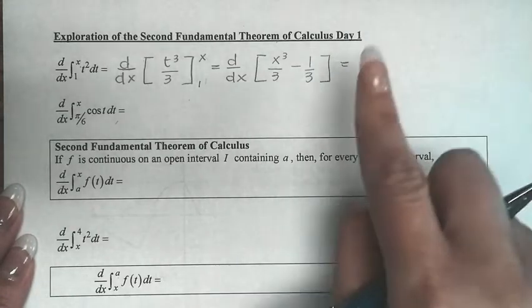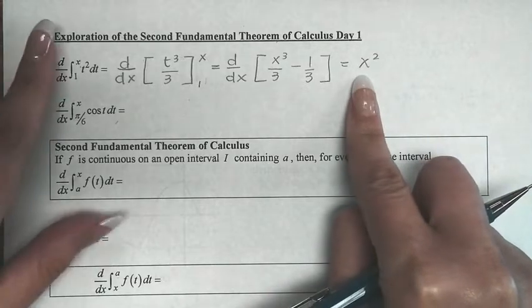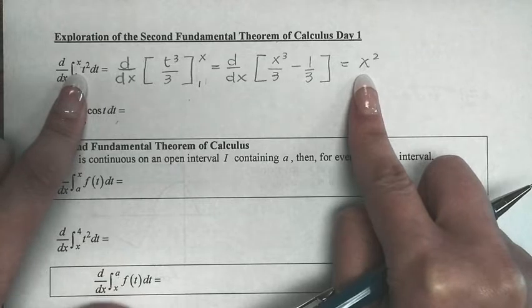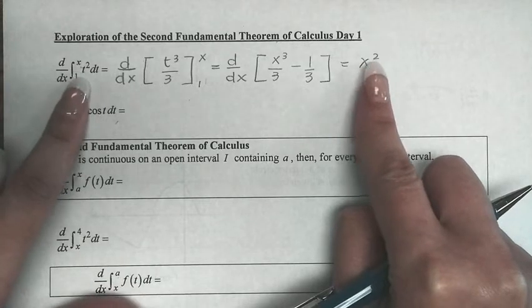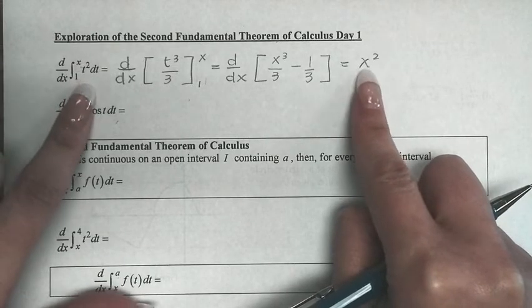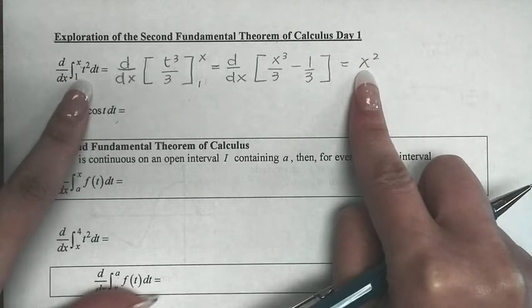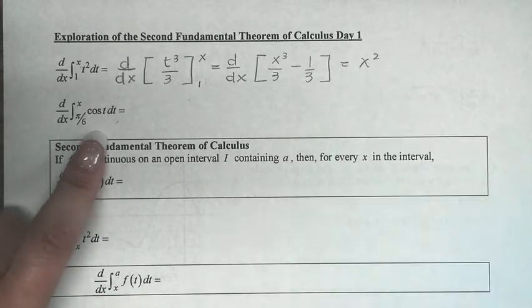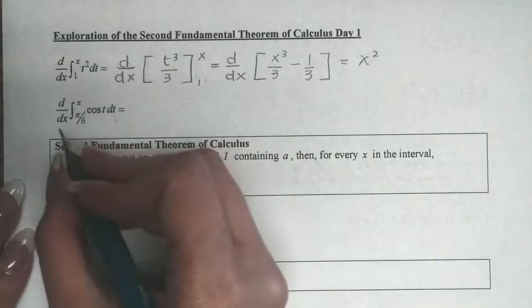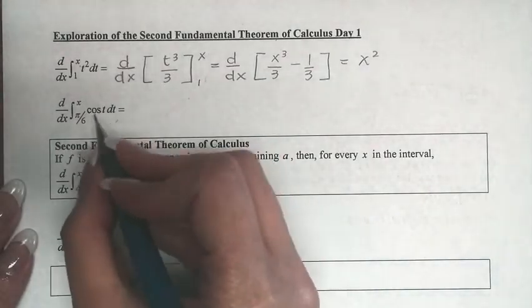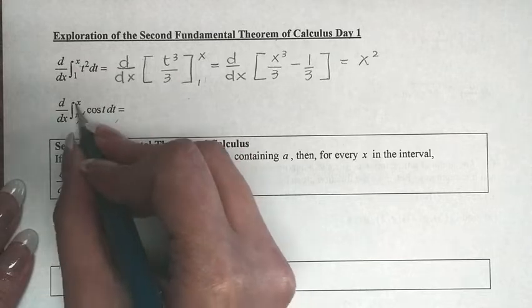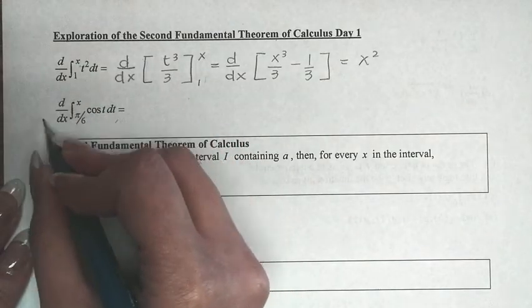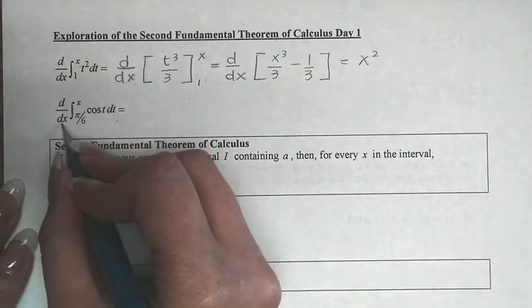Let's look at the relationship between the beginning and the end of this problem. I see t squared inside the integral and x squared as the result — they are essentially the same. Let's see if with another example we can spot the trend. We'll take the integral of cosine of t dt, evaluate it, and then take the derivative.